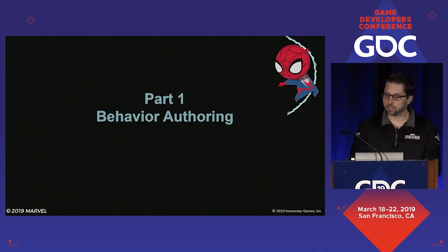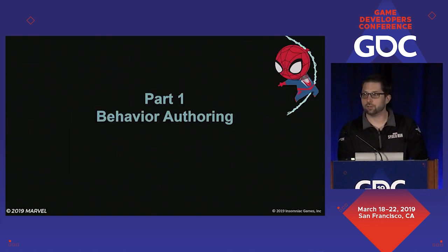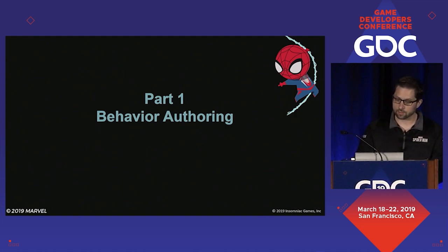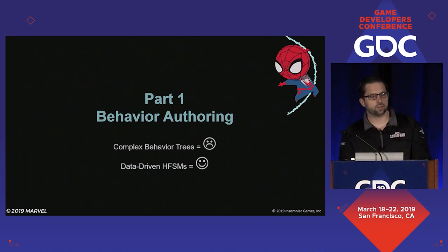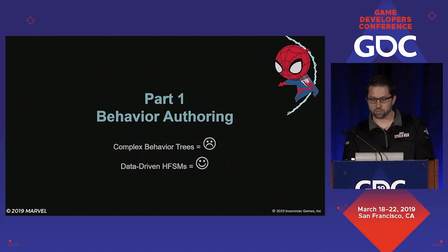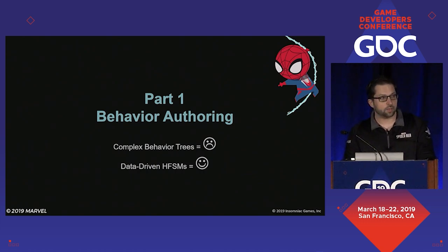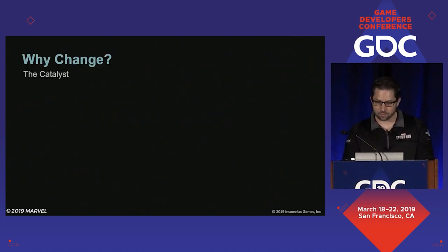Let's begin with a high-level trend that occurred over the course of development that I expect to continue — less use of complex behavior trees and more use of data-driven hierarchical finite state machines. This happened for several reasons, but the largest was simply that Marvel's Spider-Man was the largest game that Insomniac Games has made to date.